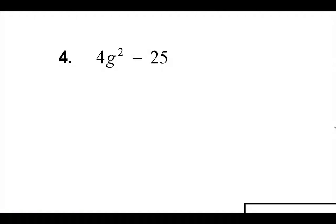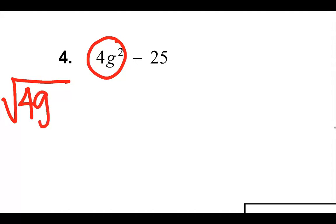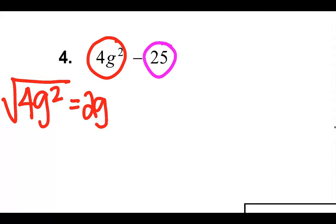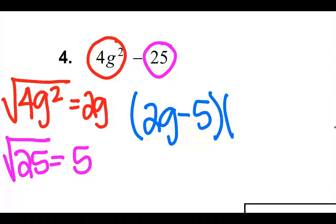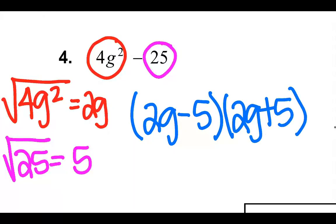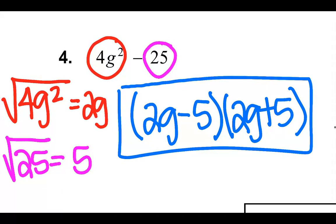Now when we start putting a coefficient, we've got to do the same thing. We're taking the square root of 4g squared. I've got to take the square root of 4, which is 2, and the square root of g squared, which is g. So we've got 2g this time. Then square root of 25 — 5 times 5 gives me 25. So I take my two terms: 2g minus 5 and 2g plus 5, and there's my answer.